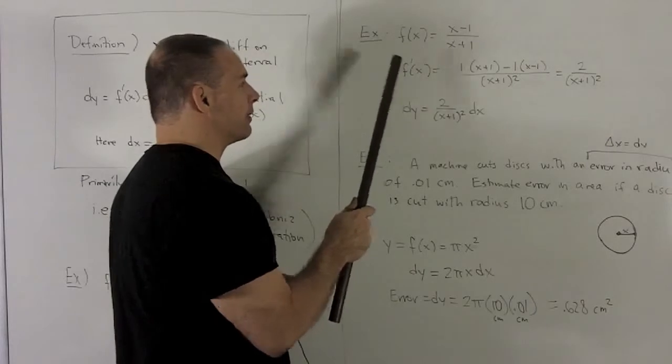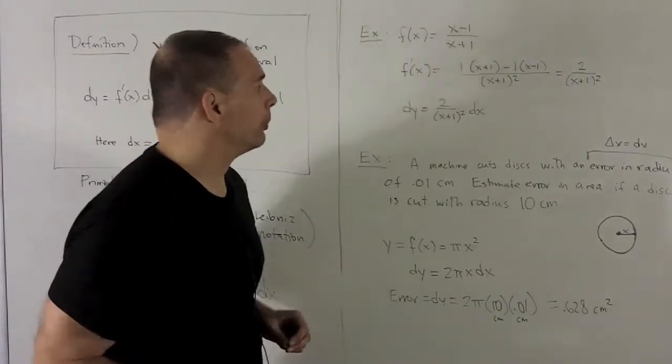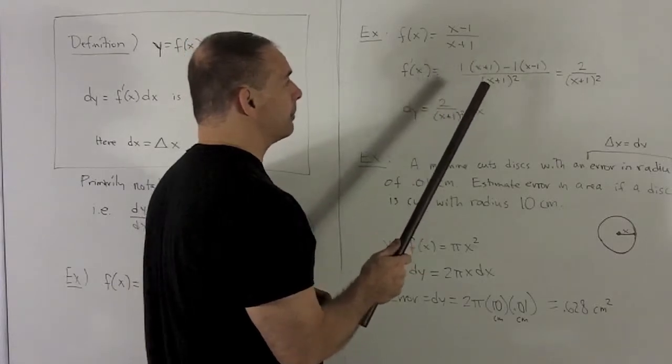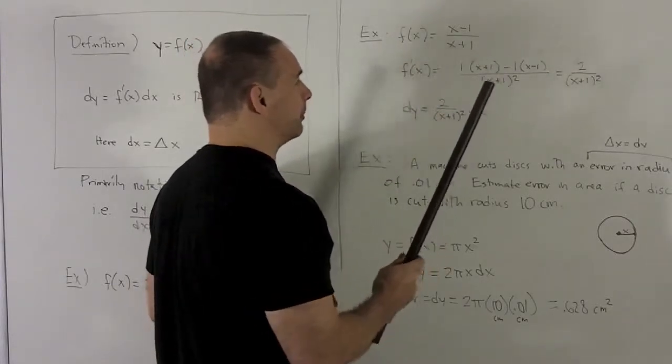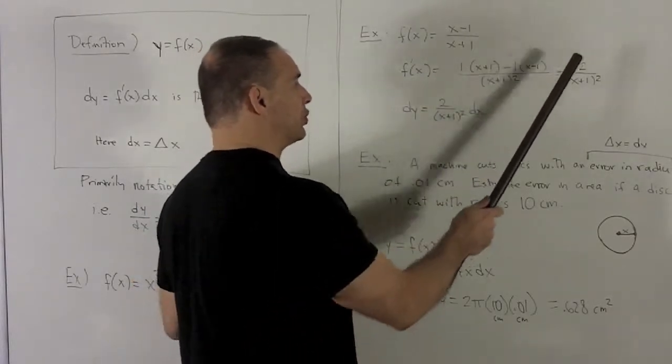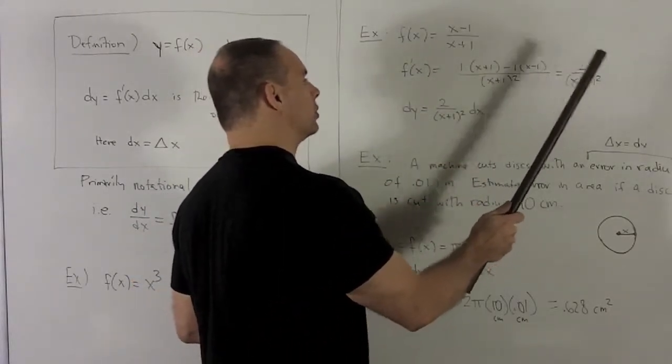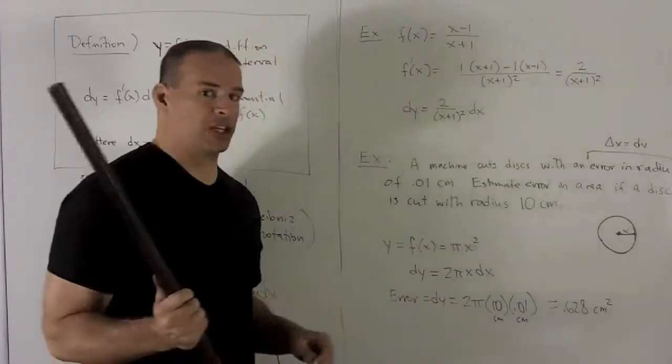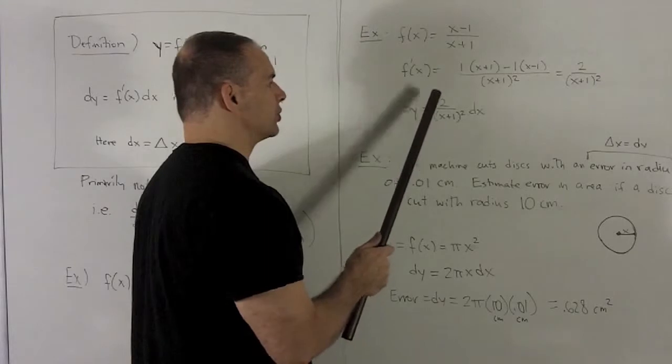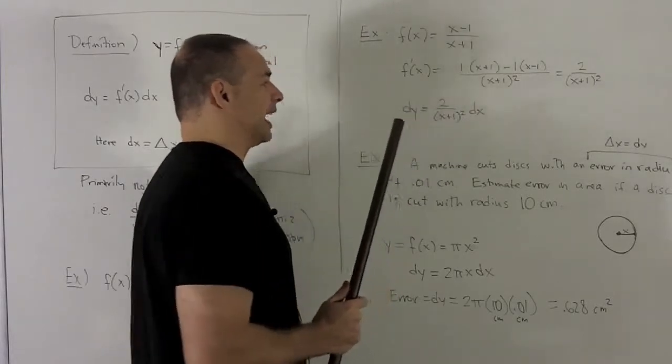So here we're going to have f'(x) given by the quotient rule. So we're going to do derivative of the top, which is 1, times the bottom minus derivative of the bottom times the top over the bottom squared. So it's going to be 2 over (x plus 1) squared. My differential is going to be dy equal to f'(x), which is 2 over (x plus 1) squared, times dx.